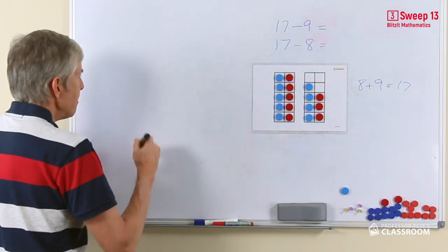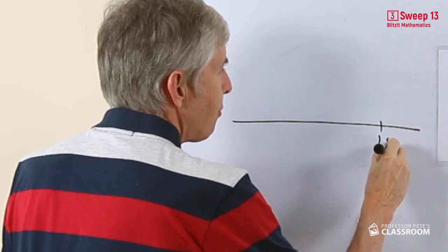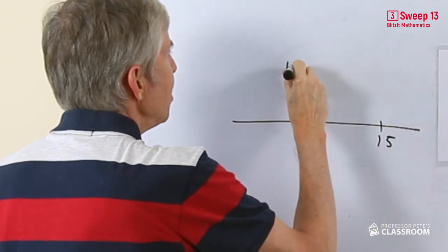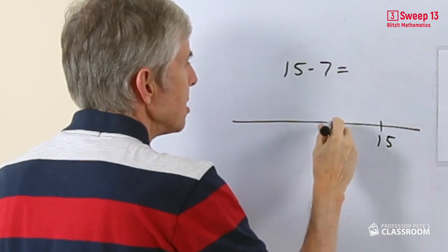We can also do open number lines. Let's take a different example, let's say 15. This will be 15 take away 7 or 8, let's say 7, and we're looking for the answer to that.